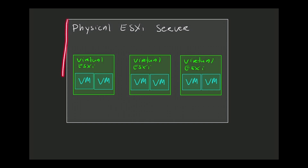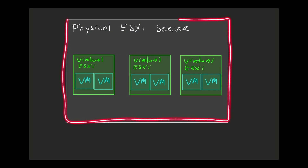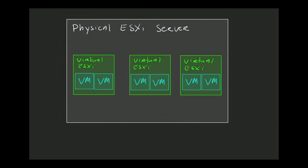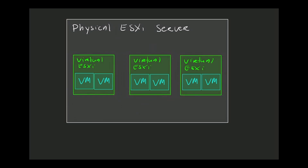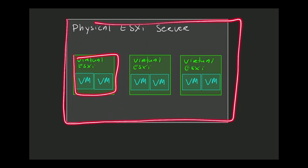As you can see in the drawing, we have a physical ESXi server, and inside of that physical ESXi server we install multiple virtual machines — in this example, three of them — and they run ESXi. So the guest OS of these virtual machines is the ESXi hypervisor. Inside of these virtual ESXi hypervisors, we install our virtual machines running guest OSes: Windows, Linux, anything supported by ESXi. So we're nesting virtual ESXi servers inside of a physical ESXi server.